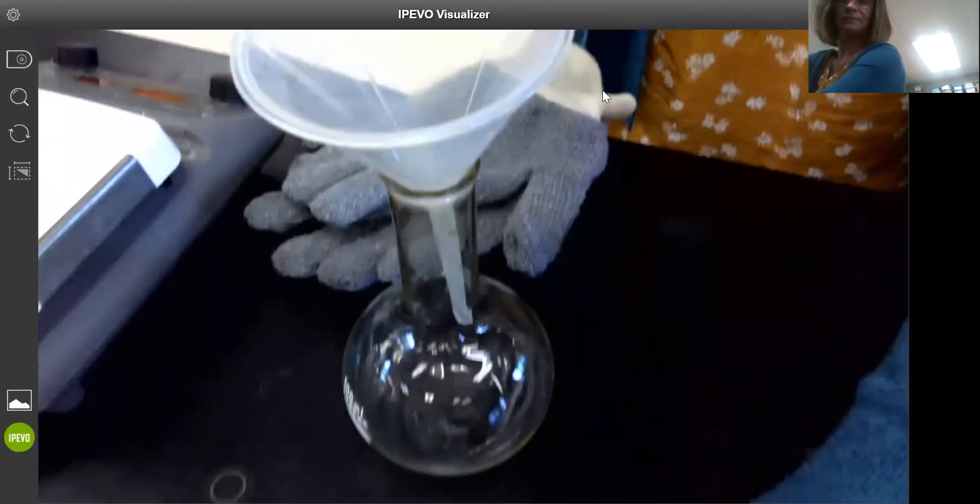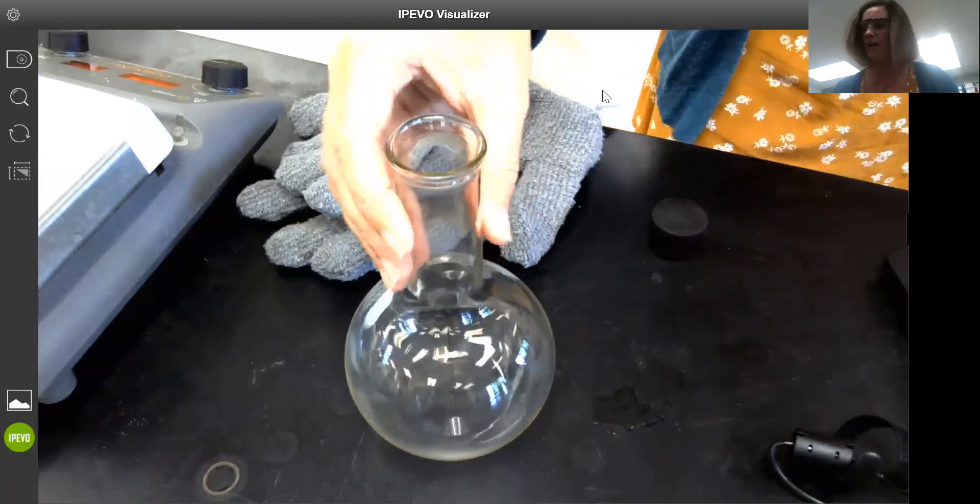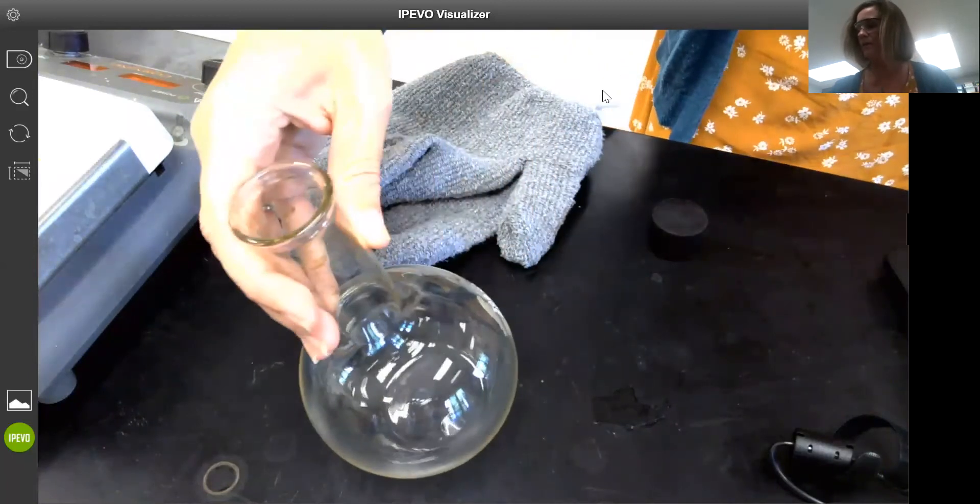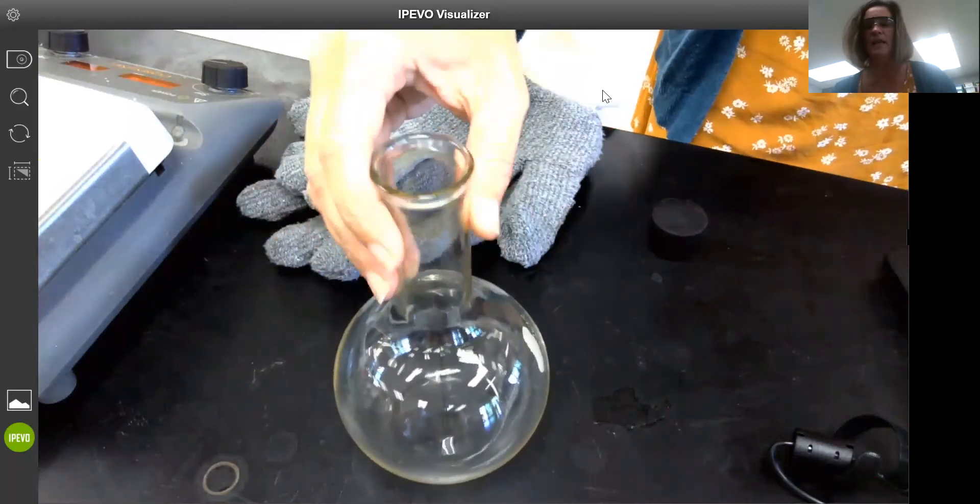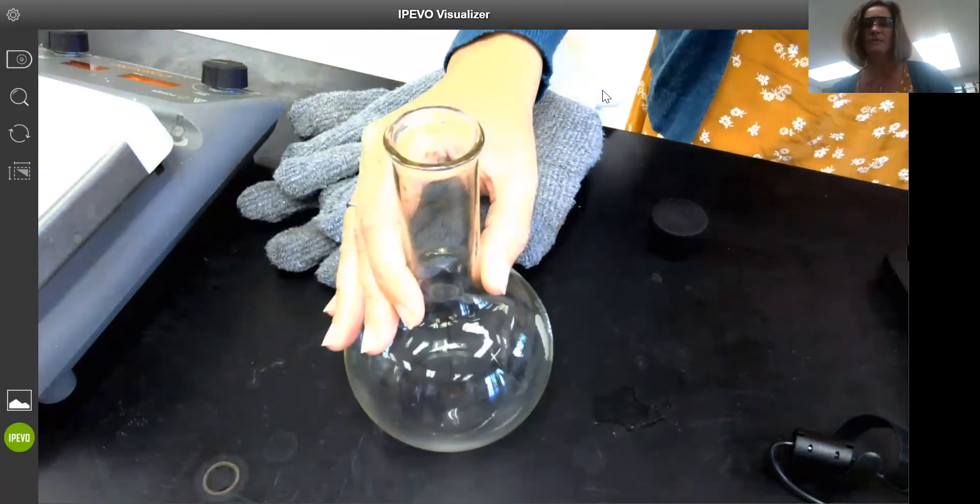This is called a Florence flask. It has a capacity of about 500 milliliters. It has a flat bottom, so you can see even though it looks round, it sits flat on the table.